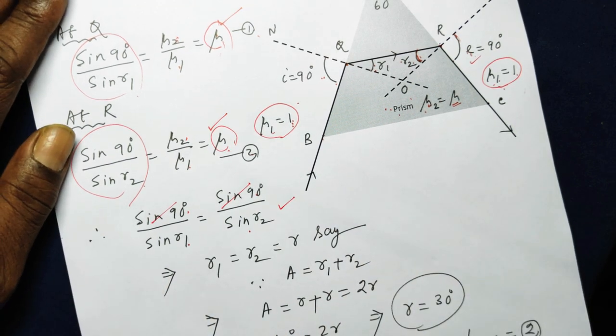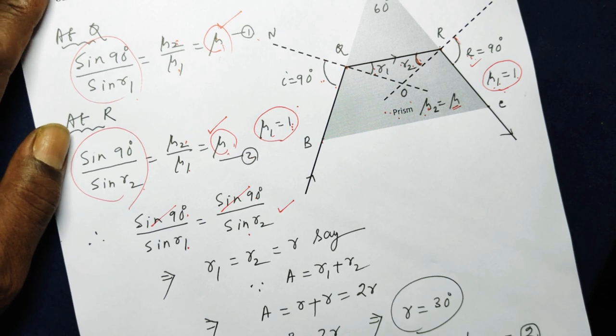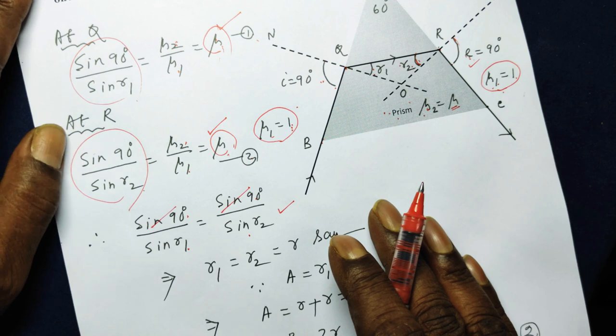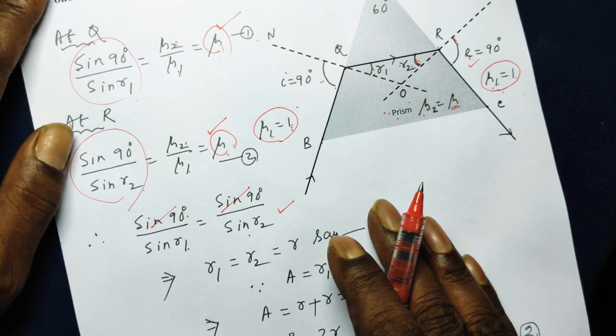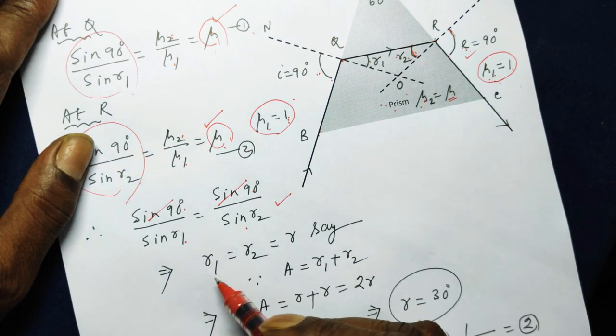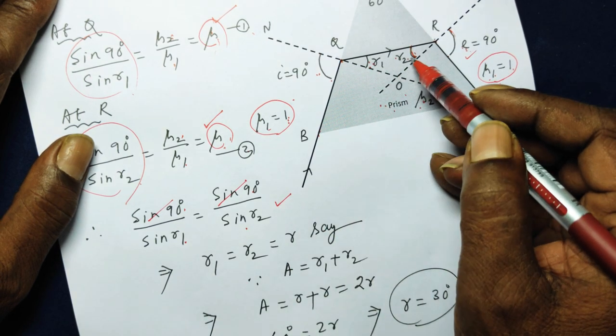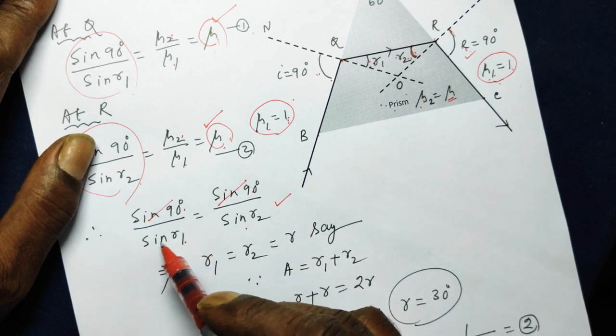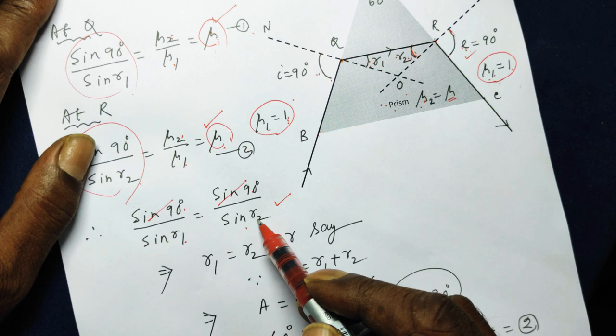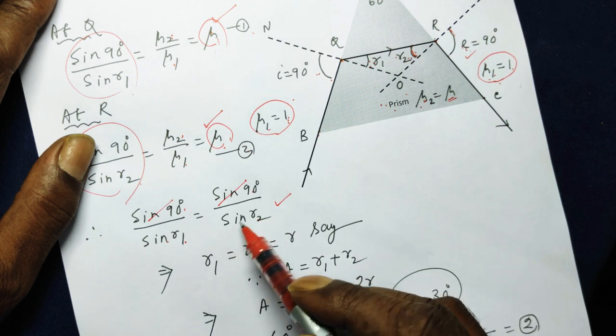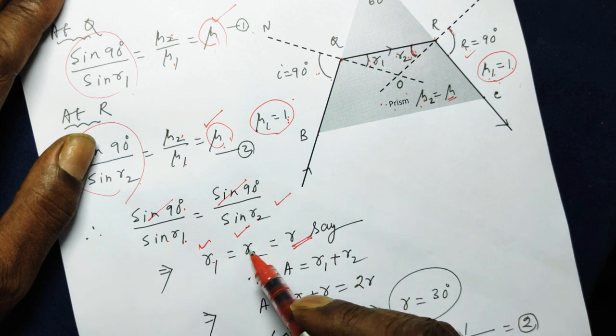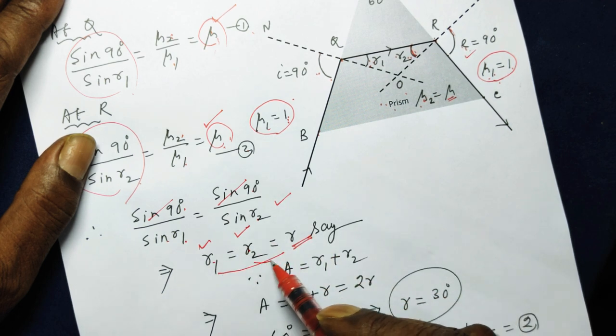Now, why this R1 will be equal to R2? Because if you cross multiply these two, sin R1 is sin R2. So if you take the sin inverse function on both sides, so R1 is equal to R2. So let it be R. Since both are equal, let me represent with the same symbol R.